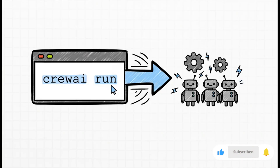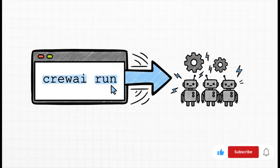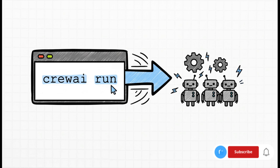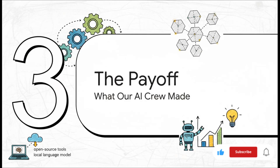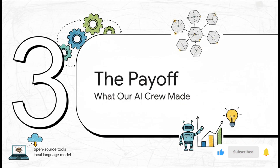After we've defined our agents and their tasks in these super simple files, what does it take to get this whole autonomous crew up and running? Just this — a single two-word command you type into your terminal: 'crewai run'. That's it. That's the big red button you push to let your agents go to work. So we set up the crew, gave them their roles, gave them their mission, and ran the command. Let's take a look at the payoff — the actual thing that our AI crew created completely on its own.